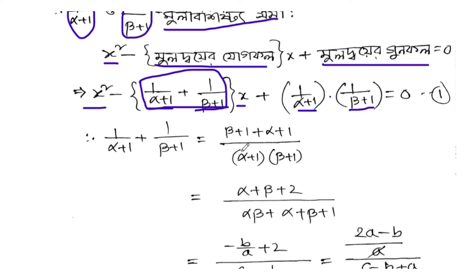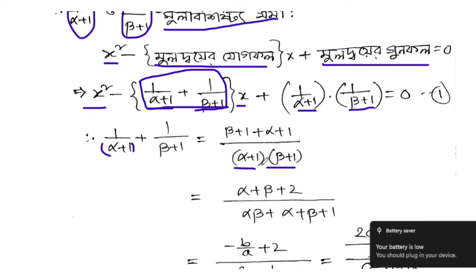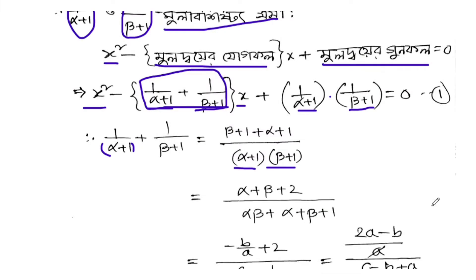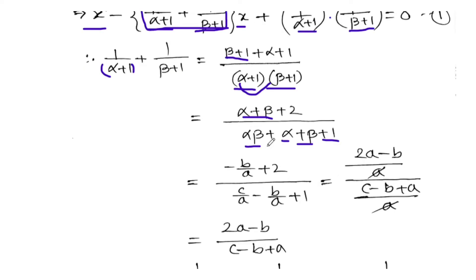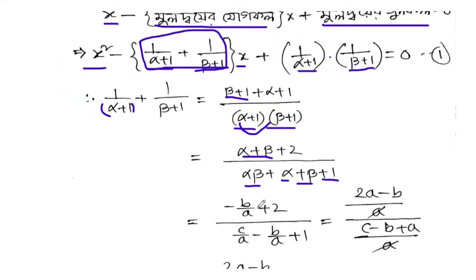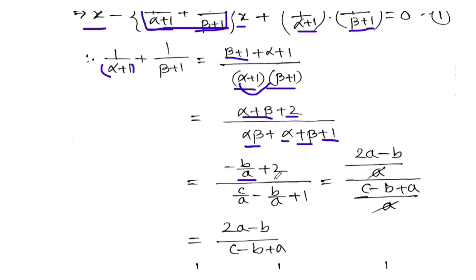So: 1 by (alpha plus 1) plus 1 by (beta plus 1). Taking a common denominator, this becomes: (beta plus 1 plus alpha plus 1) over (alpha plus 1)(beta plus 1). That gives alpha plus beta plus 2 in the numerator. Now alpha plus beta equals minus b by a, and the denominator becomes alpha beta plus alpha plus beta plus 1.